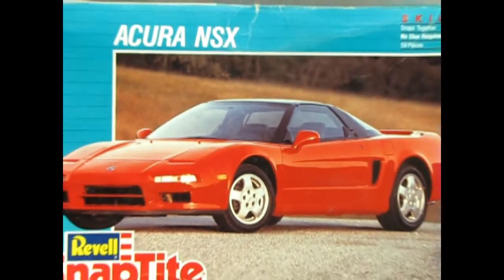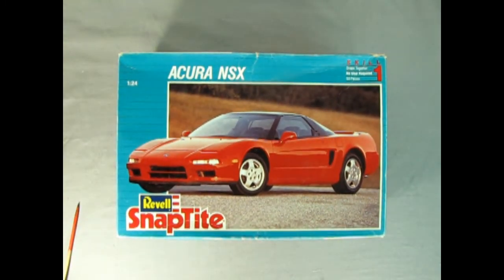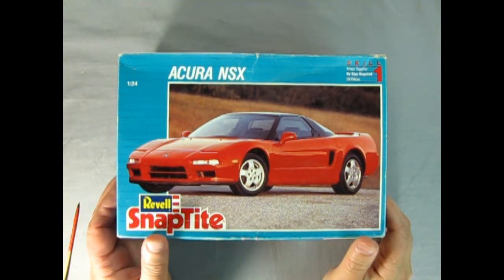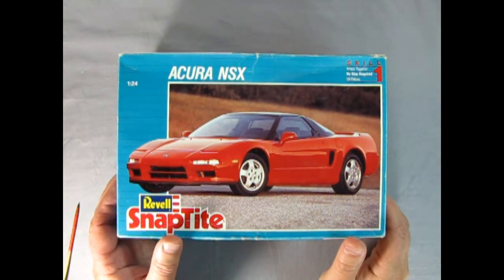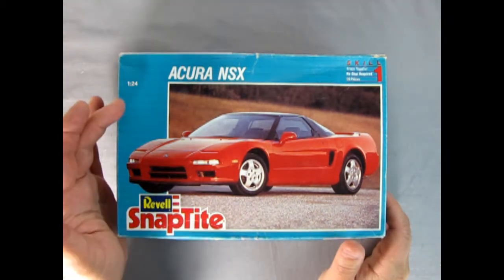And now we go all the way back to 1992 as we look at the Revell Snap-Tight Acura NSX. This is a skill level one model kit from Revell and has 59 pieces. There's no glue required and it snaps together. It's 1:24 scale.